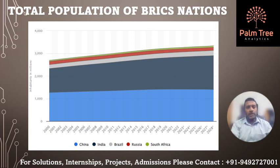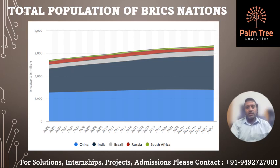First, we will compare the population criteria. Although the BRICS countries are considered the five foremost emerging economies, they are all at various stages of the demographic transition and have different levels of population development. For all of modern history, China has had the world's largest population, but rapidly dropping fertility and birth rates in recent decades mean that its population growth has slowed. In contrast, India's population growth remains much higher and it is expected to overtake China in the next few years to become the world's most populous country.